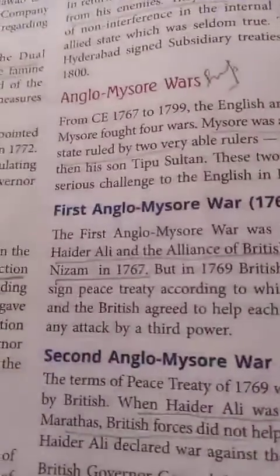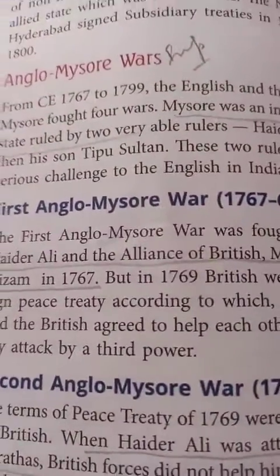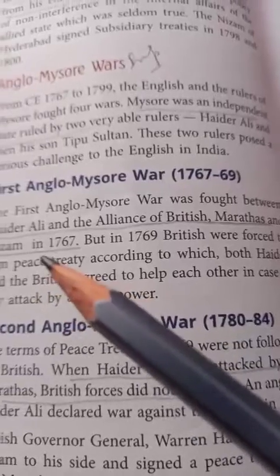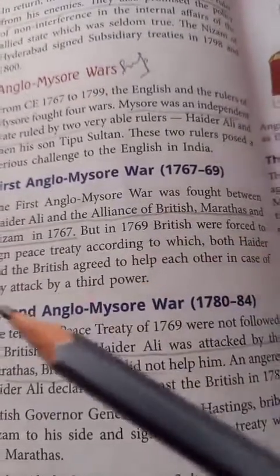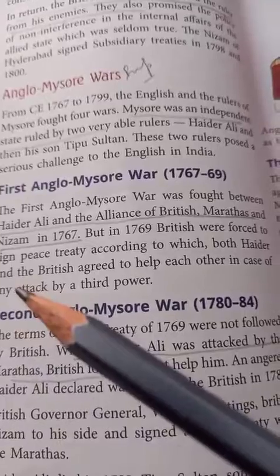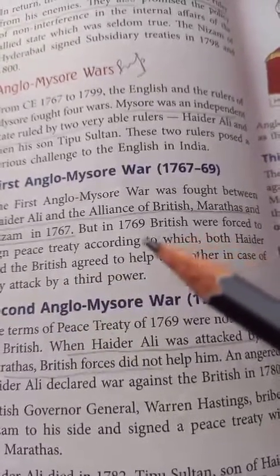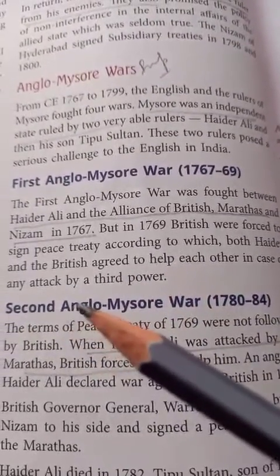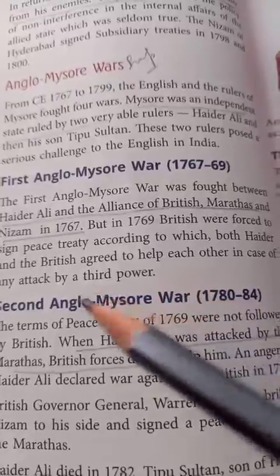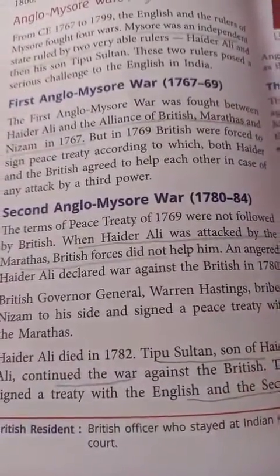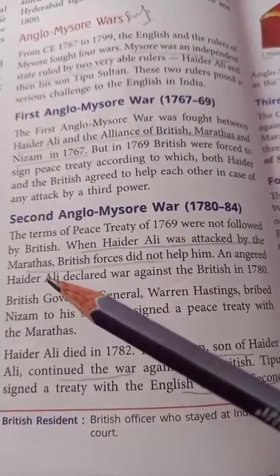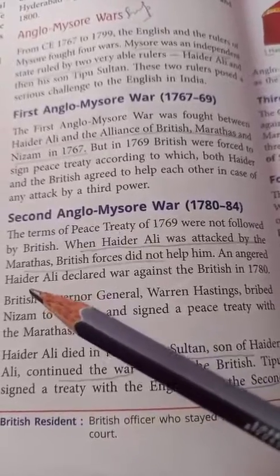Let us read one by one the four Anglo-Mysore wars. The first Anglo-Mysore war was fought between Haidar Ali and the alliance of the British, that is the Marathas and Nizams. But in 1769, the British were forced to sign a peace treaty, according to which both Haidar Ali and the British agreed to help each other. But Haidar Ali was then attacked by the Marathas and the British did not help him.